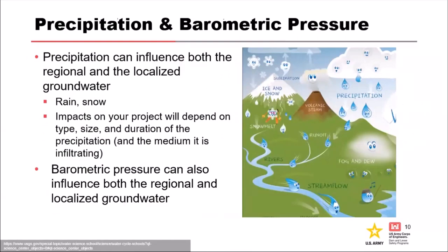Precipitation can influence both regional and localized groundwater. Rain is the most efficient way to introduce water into the subsurface. Snow will eventually make it into the subsurface when it melts, but this could occur many months after accumulation. It's important for the risk assessment team to understand how rain events might influence the project site and whether precipitation has any influence on instrumentation including observation wells, piezometers, flumes, and weirs. Barometric pressure can also influence groundwater levels on a small scale and should be considered when automating instrumentation using pressure transducers.